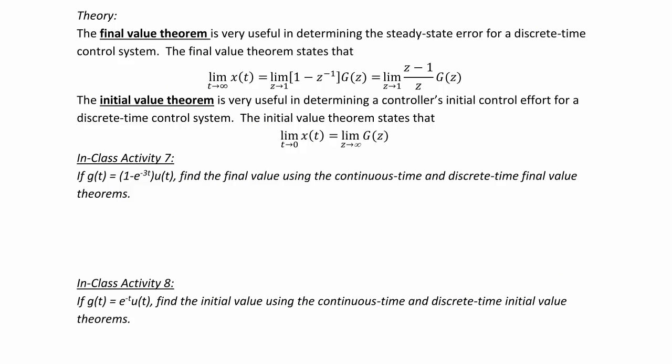Similar to Laplace transforms, there is also an initial and final value theorem useful when analyzing digital control systems. The final value theorem determines the steady state error for a discrete time control system: the limit as T goes to infinity of X of t equals the limit as Z goes to one of one minus Z inverse times G of Z, or equivalently the limit as Z goes to one of Z minus one over Z times G of Z. The initial value theorem determines a controller's initial control effort: the limit as T goes to zero of X of t equals the limit as Z goes to infinity of G of Z.